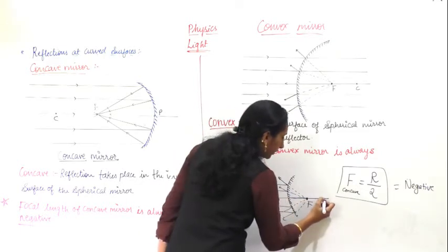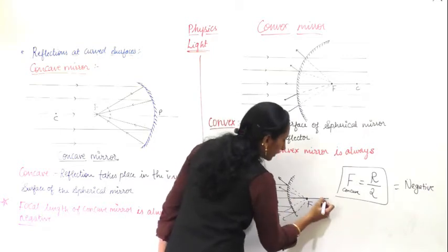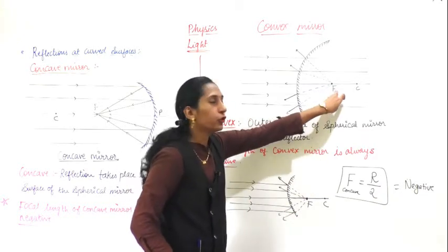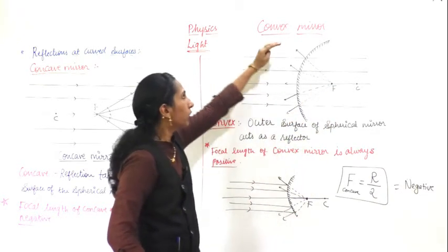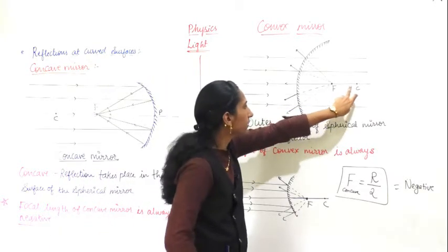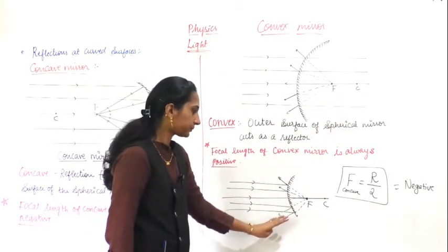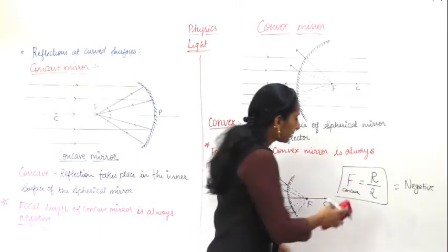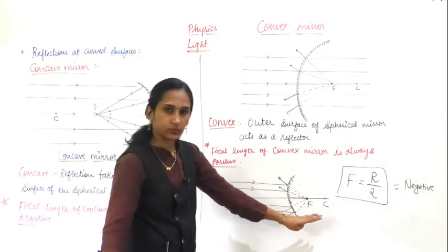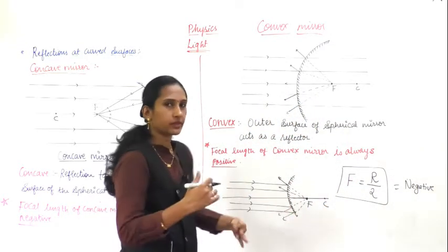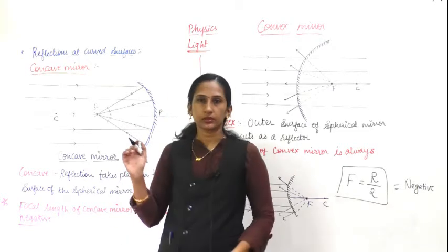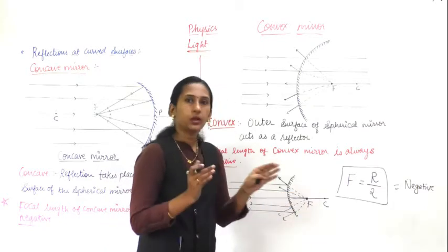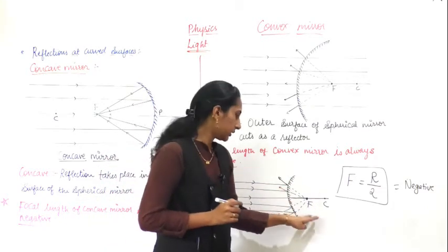For this convex mirror, the radius of curvature is behind the mirror. When you extend the reflected rays back, they all meet at one point behind the mirror, and that is your focus. So this is the focus and this is the center of curvature. The light rays reflect on the same side as the incoming rays, and the focus point is found behind the mirror.